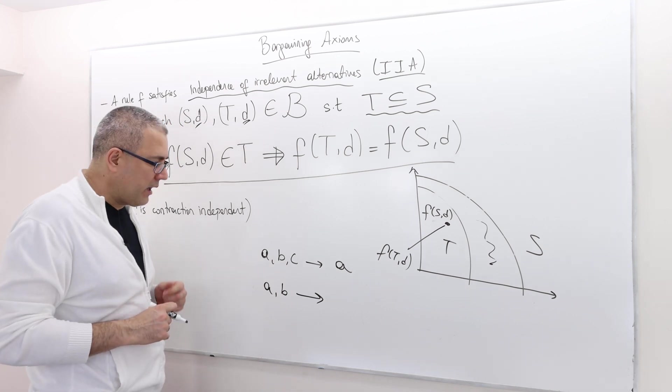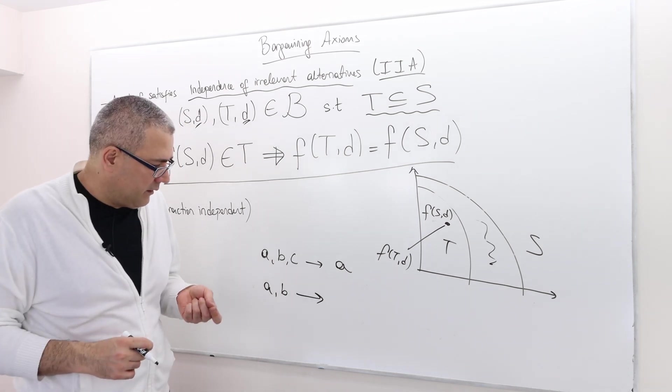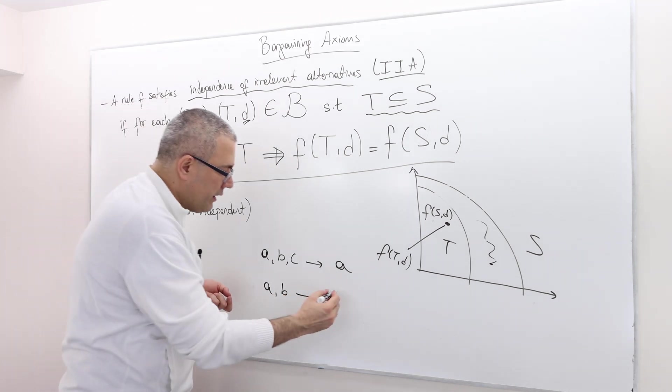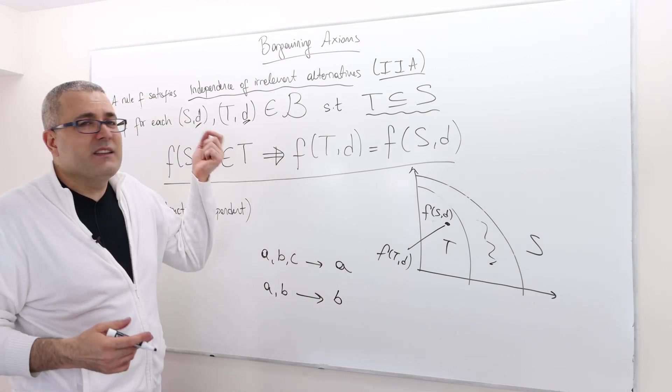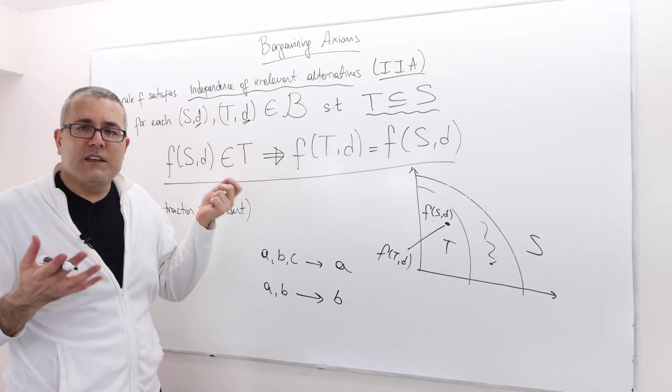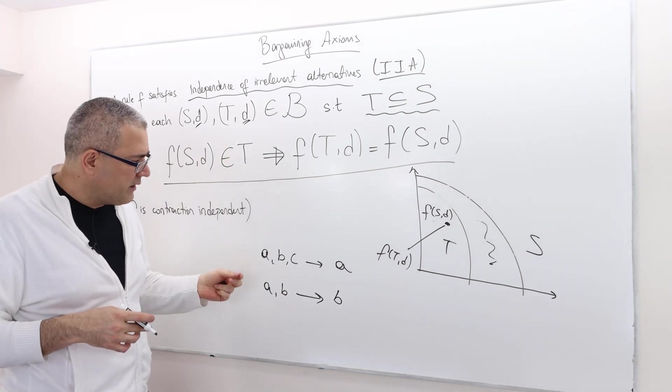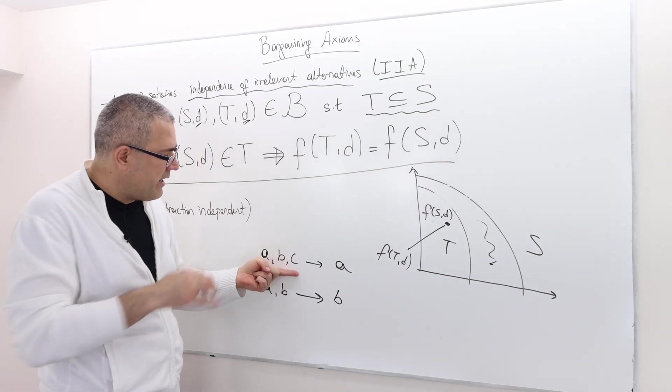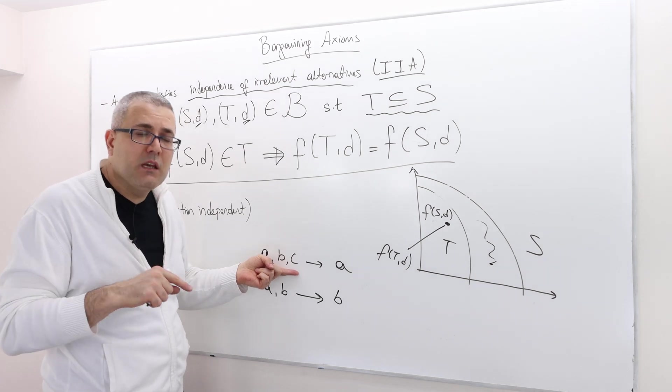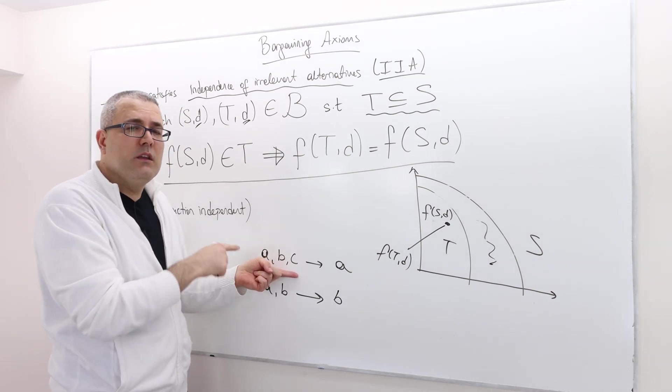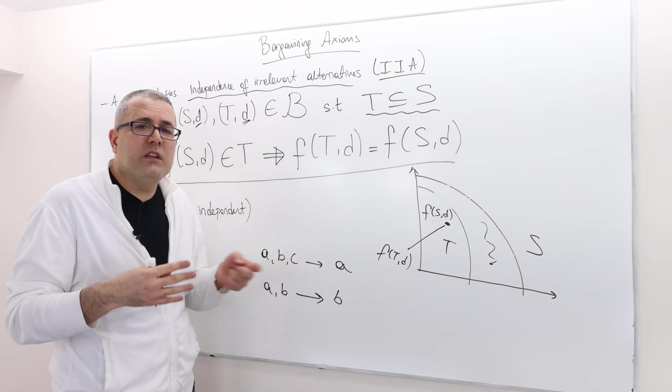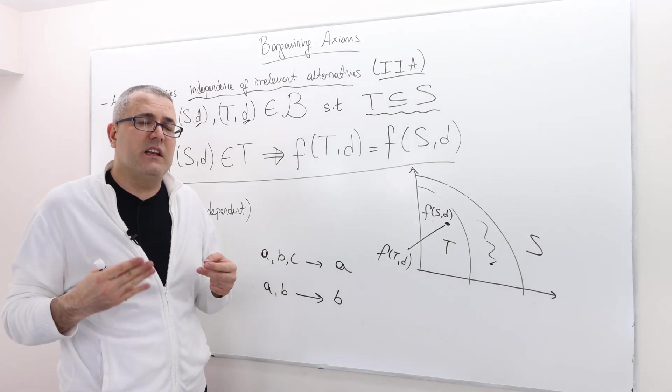And then I give you choose something between A and B. What are you going to choose? Well, if you all of a sudden decide to choose B, you obviously violate the idea or the intuition of this axiom. Why is that so? Well, because when both A and B were available, you decided to choose A. So it reveals that A is at least as good as B in the choice problems.